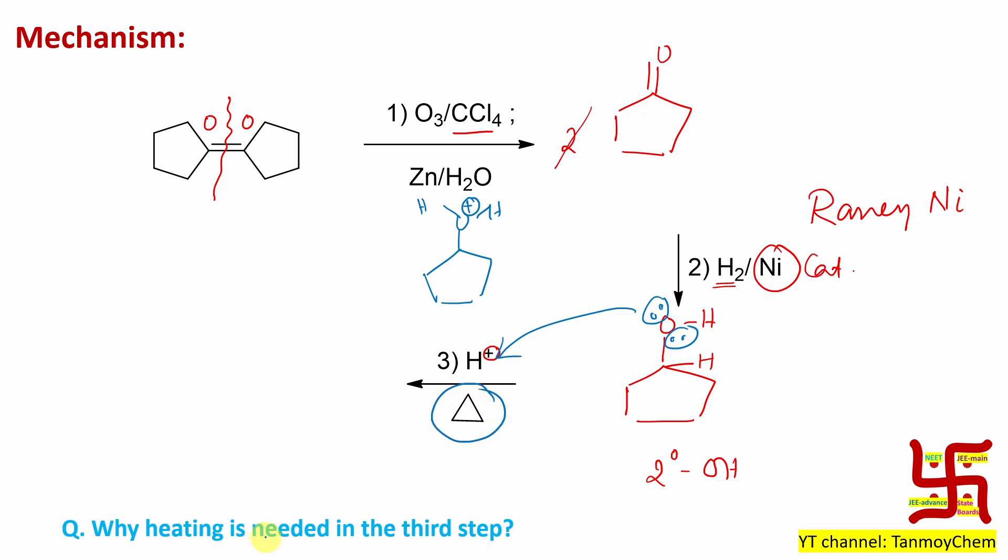So what happened? One hydrogen from here will come out. So first step, this will come out and it will result in a carbocation, secondary carbocation. Now this secondary carbocation will undergo beta hydrogen elimination.